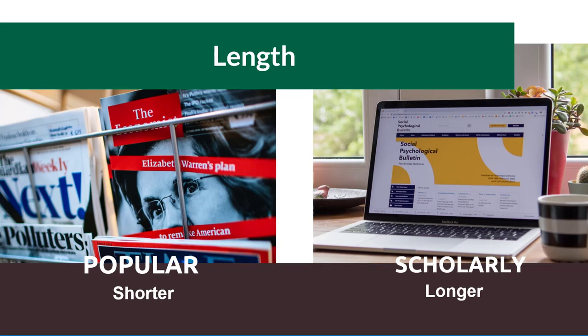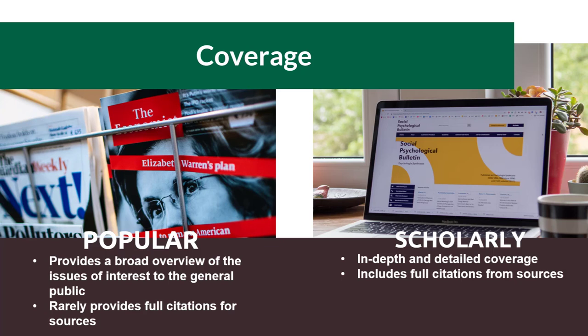Look at the length of the source. Popular sources tend to be shorter, while scholarly sources are longer. Consider how the source covers the information. Popular sources provide a broad overview and are of interest to the general public, and they rarely provide full citations to sources. Scholarly sources, on the other hand, provide in-depth, detailed coverage of a topic and include full citations from sources.